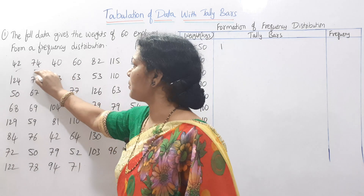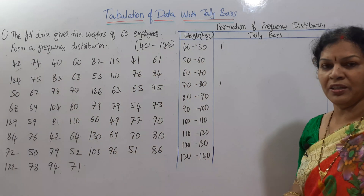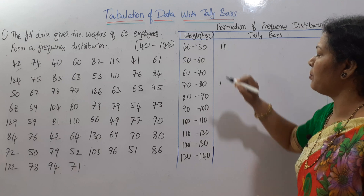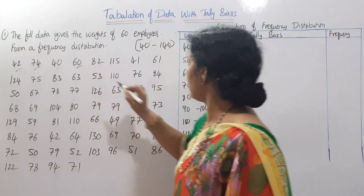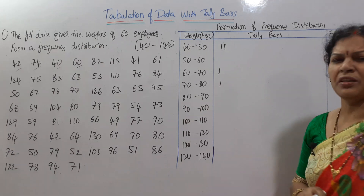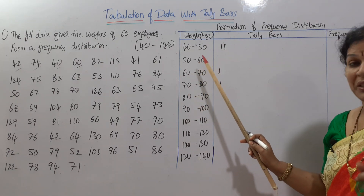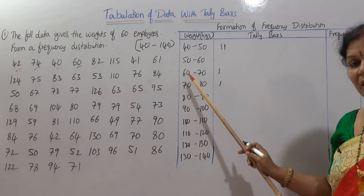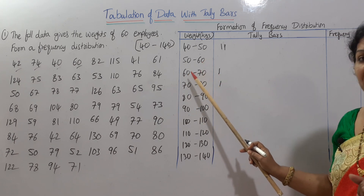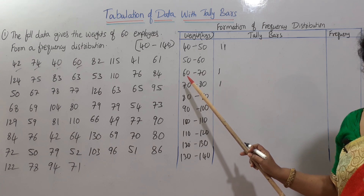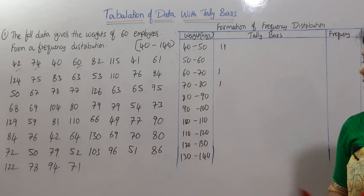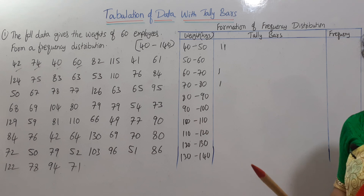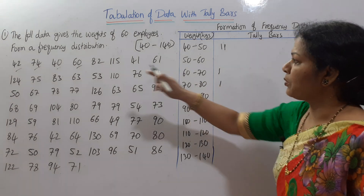Once placed, we put a tick mark and move on. Next: 74 goes in 70–80; 40 goes in 40–50. Next is 60 — many of you may have a doubt: 60 appears in two class intervals. Remember, always give preference to the upper class interval. So 60 lies in 60–70, not 50–60. Similarly, 90 goes in 90–100, not 80–90. Make this clear.